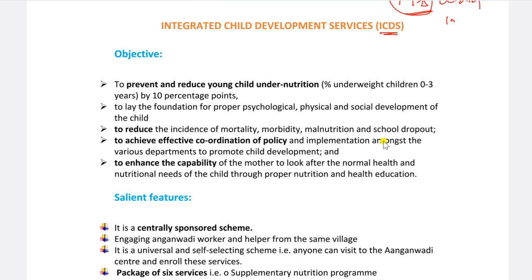This scheme ippadaki run avutundi. This scheme ki inda underlo unna sub-schemes kuda run avutundi. That is why this one is important. The main objective entante - 0 to 6 years children evaru untaru. Vaalani uddeshinci ies program. As per the 2011 census, around 158 million of the population of India were children in the age group 0 to 6 years.